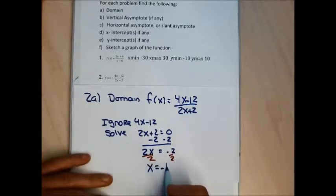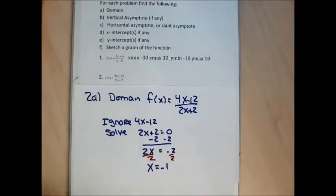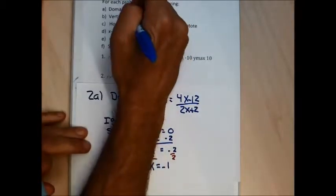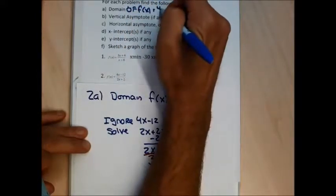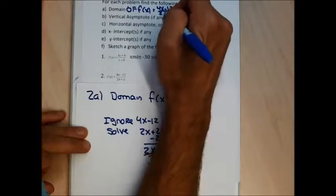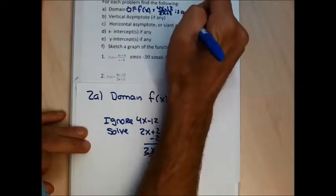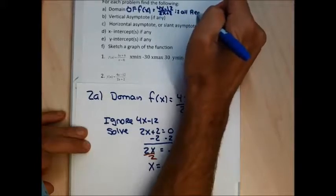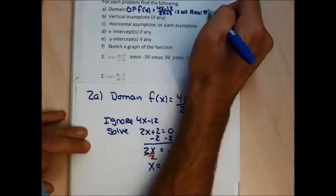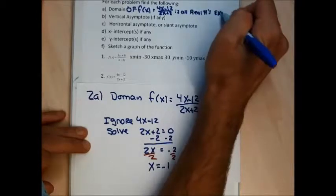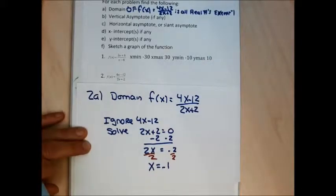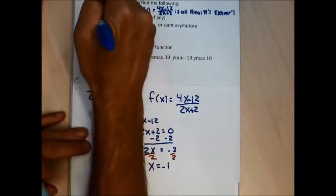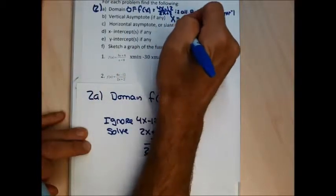x equal to negative 1 — the algebra for finding the domain of a fraction gives you the vertical asymptote, but it doesn't give you the domain. For the answer for the domain, I'm going to say the domain of f(x) equals 4x minus 12 over 2x plus 2 is all real numbers except negative 1. For the vertical asymptote, it's just going to be x equal to negative 1, which comes right up in the algebra for the domain.